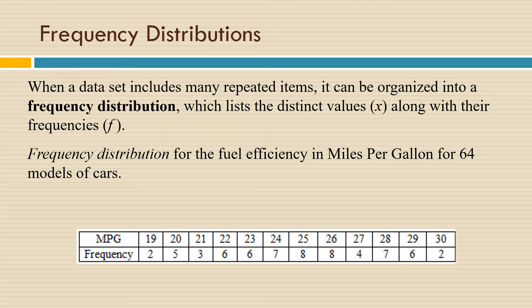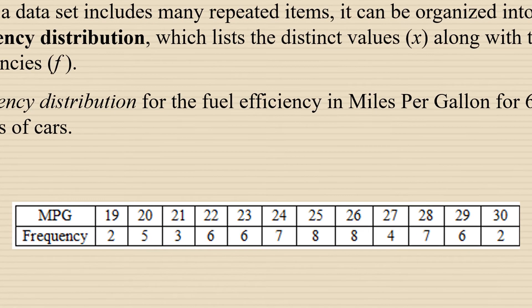As we've seen in other videos, when a data set includes many repeated items, it can be organized into a frequency distribution, which is just a list of all the data values along with their frequencies or how often they occur. So we've seen this example where we have a frequency distribution for the fuel efficiency in miles per gallon for 64 different models of cars.